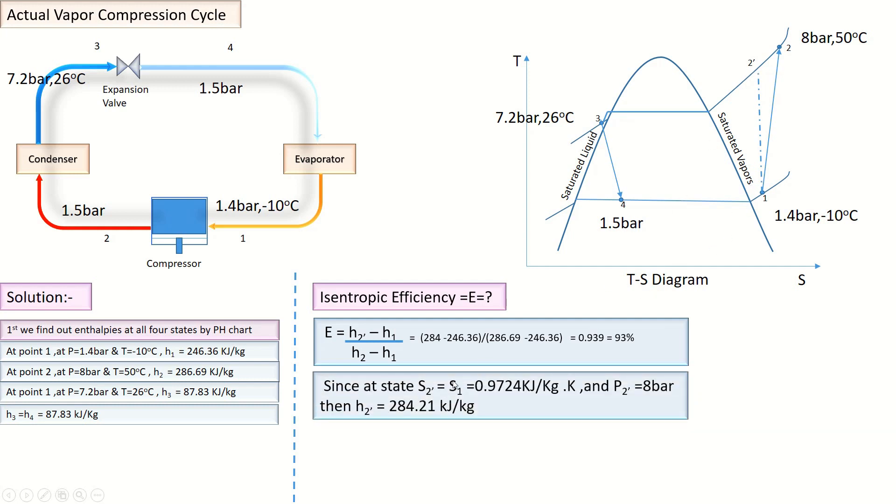Since the entropy at Point 1 and 2' is constant, by finding entropy and pressure which is 8 bar, we can calculate enthalpy at Point 2 dash, which is h₂' = 284.21 kJ/kg. Putting these values in isentropic efficiency, we get η = 93% efficiency. That means 7% more power is required in actual vapor compression cycle.